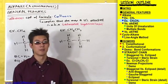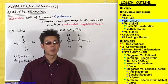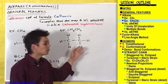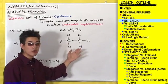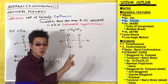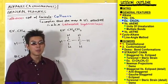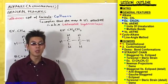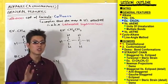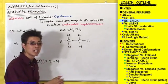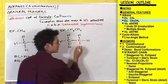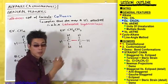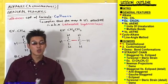A saturated hydrocarbon is a compound that has as many hydrogens attached as possible for the number of carbons present. In this case we have two carbons. Each carbon is capable of making four bonds, so it seems like each carbon should bond with four hydrogens — but remember that one of those bonds has to be used to connect the two carbons.